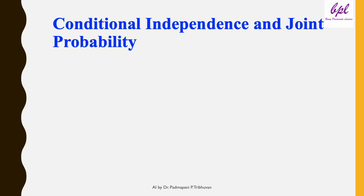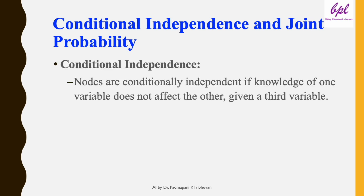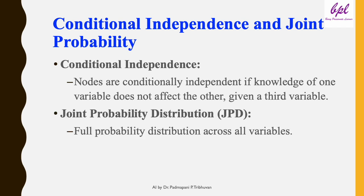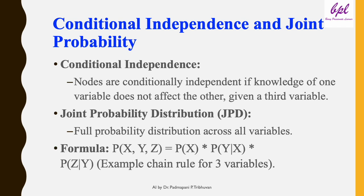A crucial concept in Bayesian networks is conditional independence. Two nodes are conditionally independent if knowing one does not provide additional information about the other given a third variable. For example, once we know rain, the relationship between cloudy and sprinkler becomes irrelevant. Another key concept is the joint probability distribution, which describes the probability of all variables in the network occurring together. Using the chain rule of probability, we can decompose the joint probability distribution into simpler terms. For instance, for three variables x, y, z: P(x, y, z) = P(x) × P(y|x) × P(z|y). This factorization is what makes Bayesian networks computationally efficient.